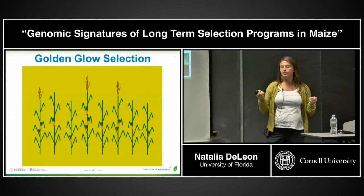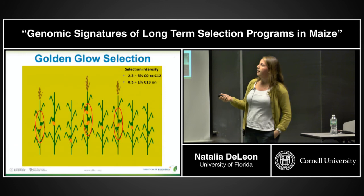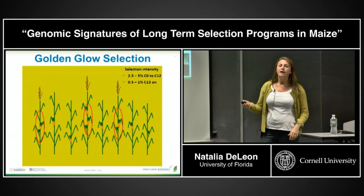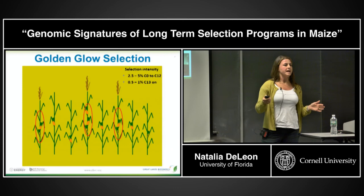Selection intensities in this population were approximately 2.5 to 5% between Cycle 0 and Cycle 12, when plot density was a little lower. Since Cycle 13, this has been a pretty intensely selected population at about 0.5 to 1%.